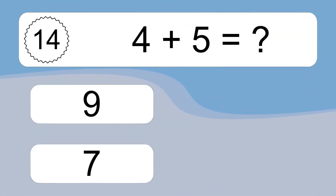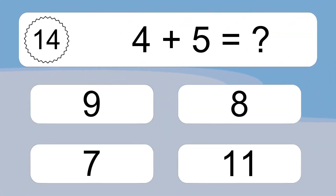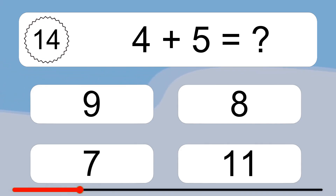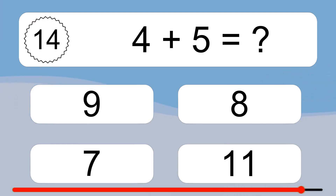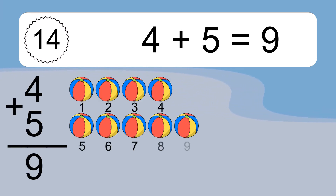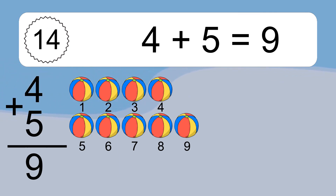4 plus 5 equals what? 4 plus 5 equals 9. Let's count it: 1, 2, 3, 4, 5, 6, 7, 8, 9.